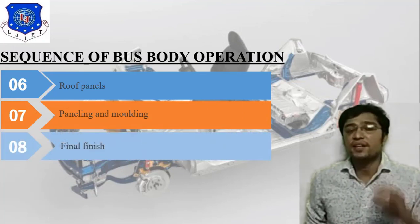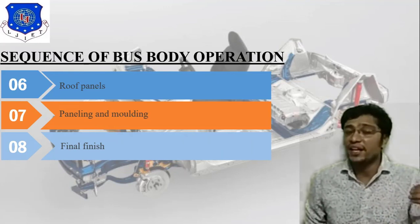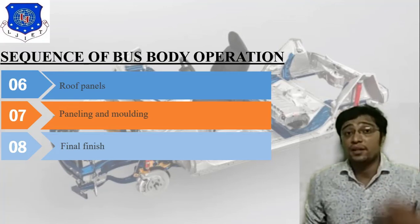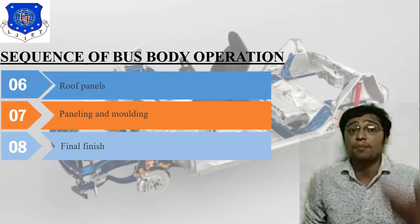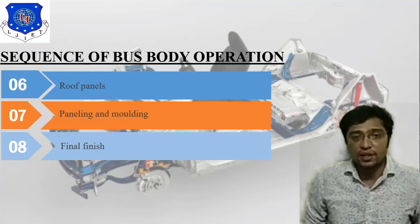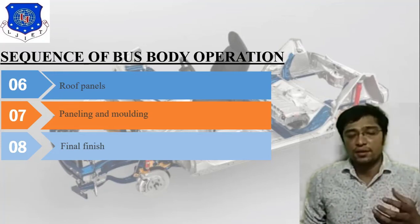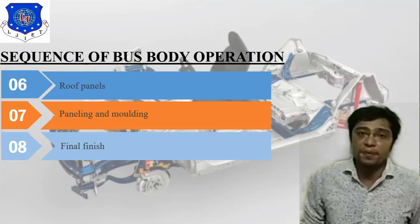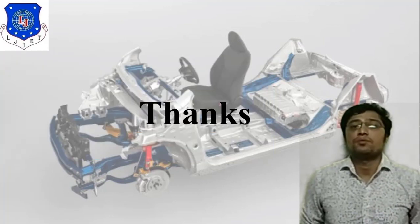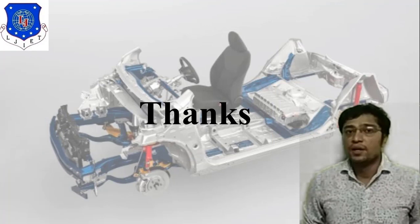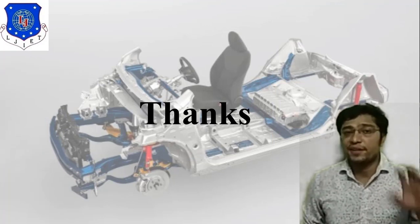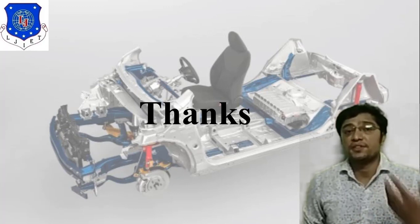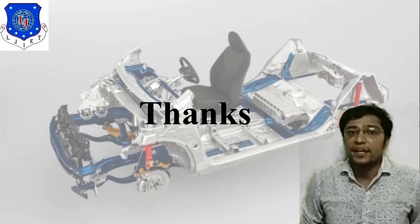The last step in the sequence is the final finish. So the flow is: integrate the first four parts, then perform general inspection, then develop the roof panel, then do paneling and molding, and finally apply the finishing. In this session we completed types of construction related to chassis, bodywork, and general design issues. In the next session we will discuss different sections used in the frame. Thank you.